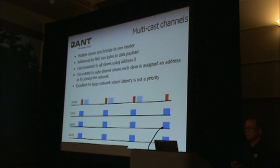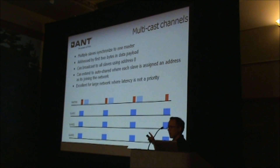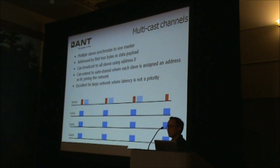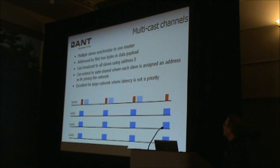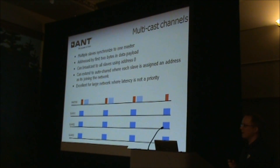But if you look at this in the time domain, using the same kind of diagrams I showed you earlier, you can see that all this really is, is a master channel — the master transmitting at some channel period — with a whole series of slave devices that all synchronize to the same master. If you're just doing broadcast messages, you could have an infinite number of slaves synchronized to that channel, and they're all going to receive the same message. What we've done with shared channels is reserved the first two bytes of the message payload to specify a slave address.